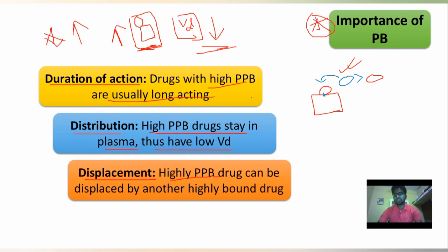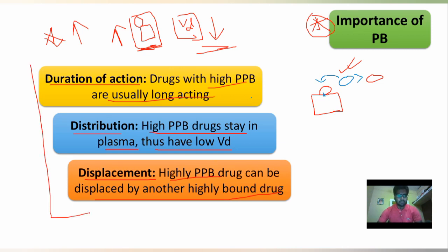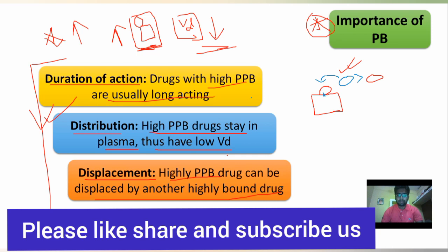The drug with higher protein binding affinity displaces another bounded drug. These are the three major importances of protein binding. This is the end of our video — hope all of you learned well. Please like, share, and subscribe to our channel. Thank you.